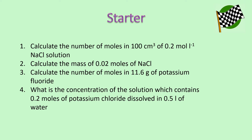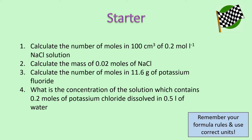If you're still unsure, give me an email and I'll run through things with you. A really important point to note is that you need to make sure you're happy with your formula rules, which is your prefix and valency rule. If you're not happy with that, go back and look at that first. Make sure you're happy with all of your units for mass, volume, and concentration. If you want to pause here, have a go at the starter questions — the answers will be up in a moment.